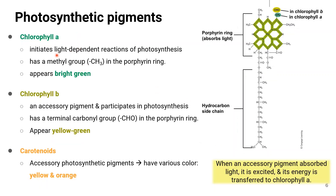Chlorophyll A initiates the light-dependent reactions of photosynthesis; it has a methyl group in the porphyrin ring and appears bright green. Chlorophyll B is an accessory pigment that participates in photosynthesis; it has a CHO or terminal carbonyl group in the porphyrin ring and appears yellow-green. The next pigment, carotenoids, is an accessory photosynthetic pigment with various colors — yellow and orange.